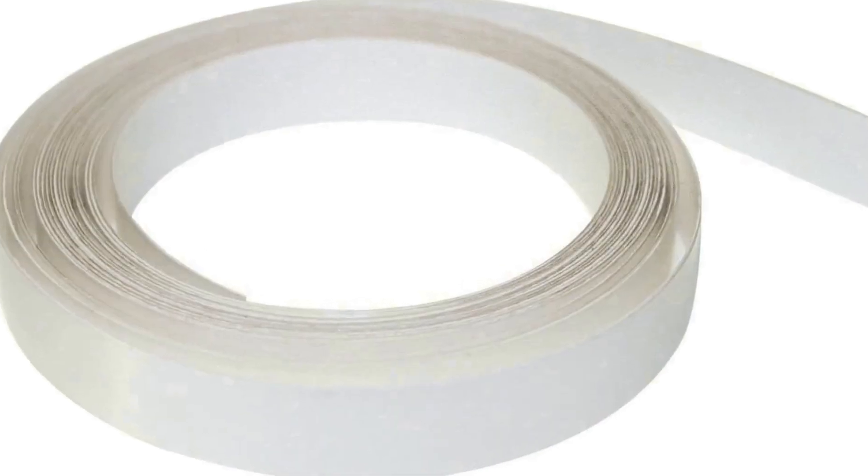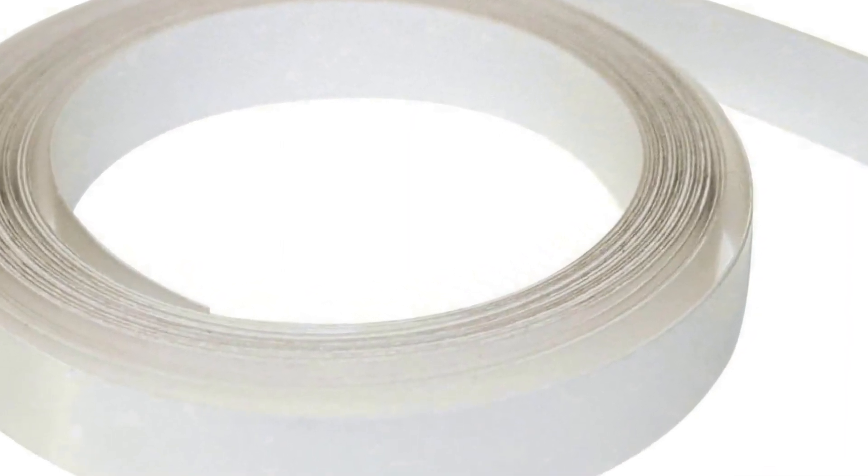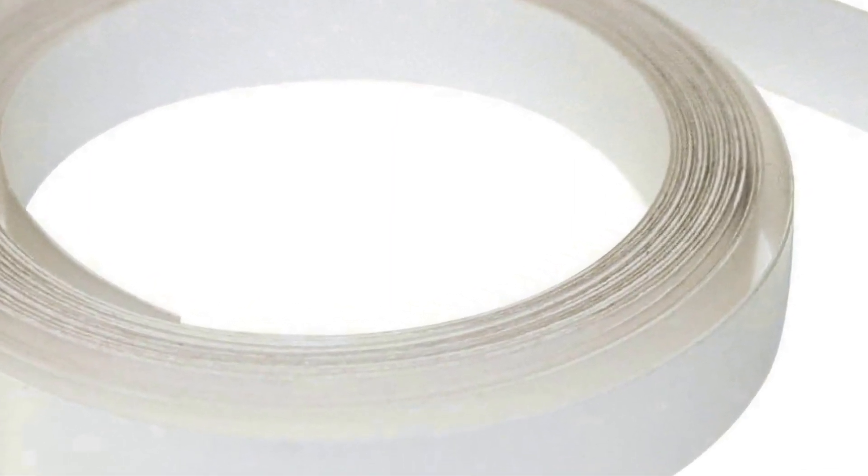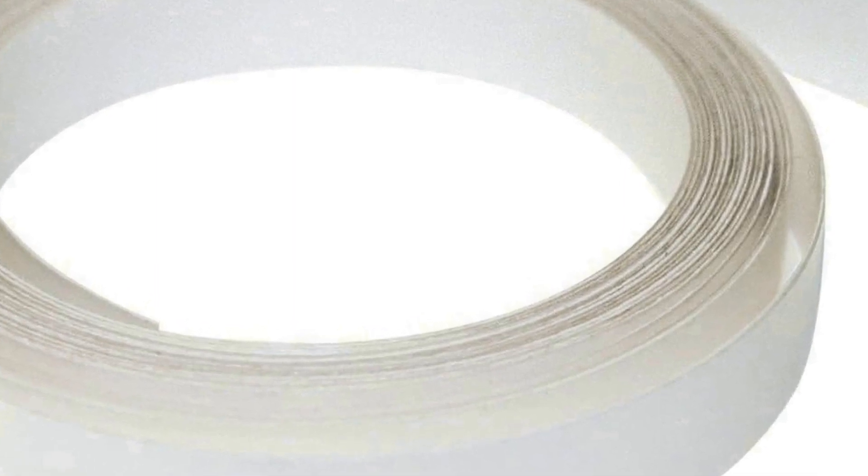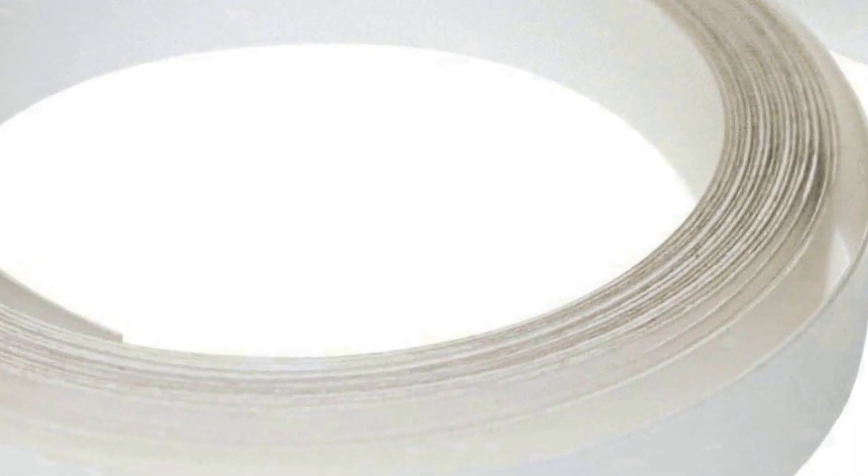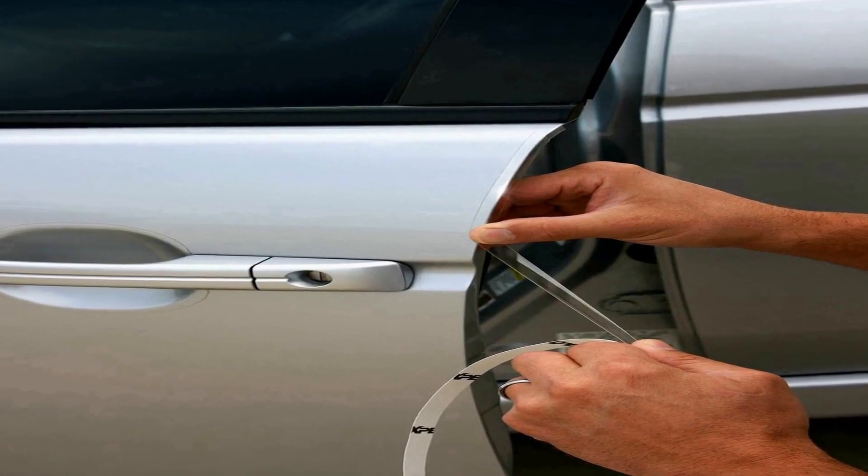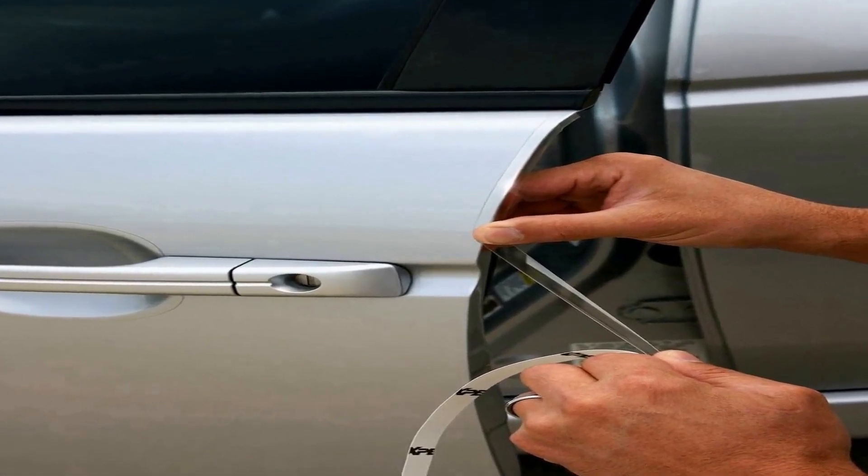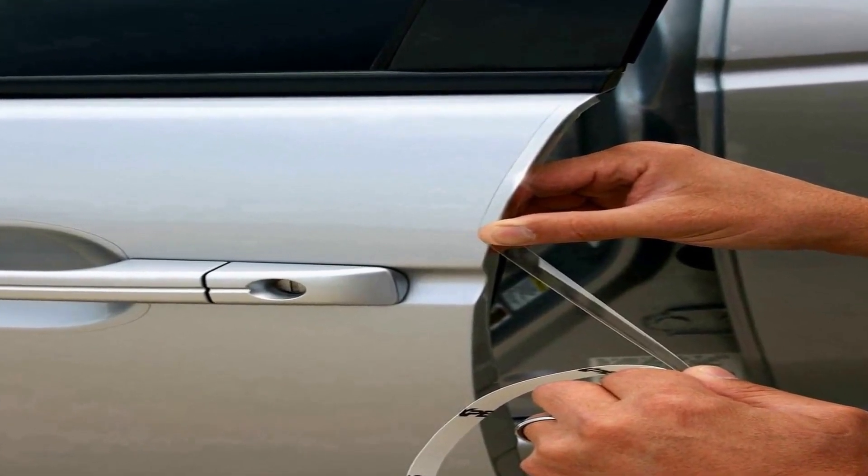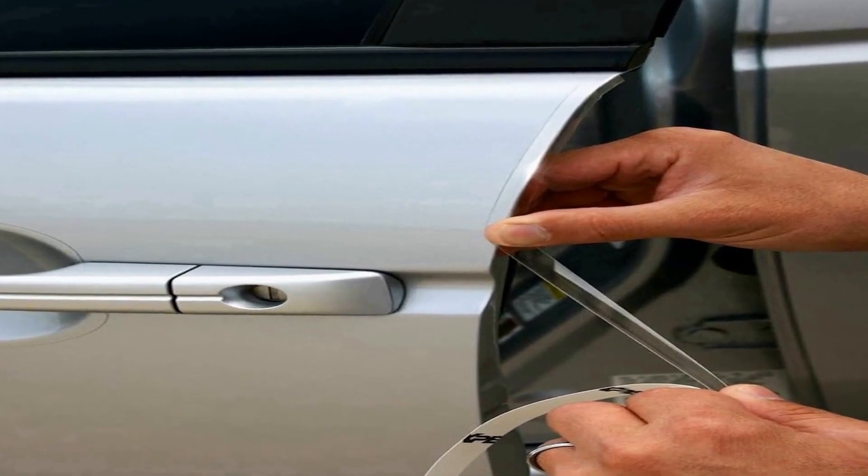The XPEL Clear Universal Door Edge Guard 0.38 inches by 12 feet Paint Protection Film Kit R3023 is a high-quality automotive accessory designed to safeguard your vehicle's door edges from potential damage. This protective film kit is composed of XPEL's premium ultra-clear material, ensuring that it provides an unobtrusive yet effective layer of defense.